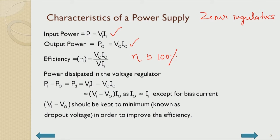Power dissipated in the voltage regulator is input power minus output power. Since input power is VI·II and output power is V_out·I_out, I_out differs from II only in terms of the bias current requirement of the voltage regulator — that bias current is in addition to I_out supplied in II.